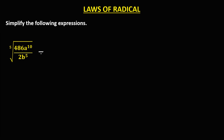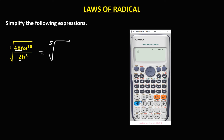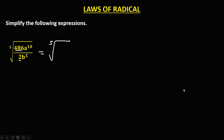For the next given, we have the 5th root of 486 divided by 2, times a to the power 10 over b to the power 5. First simplify 486 divided by 2, which equals 243. So this is the 5th root of 243, then copy a to the power 10, over b to the power 5.